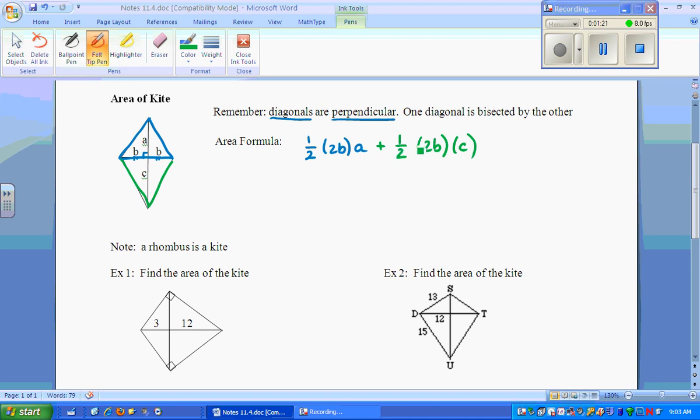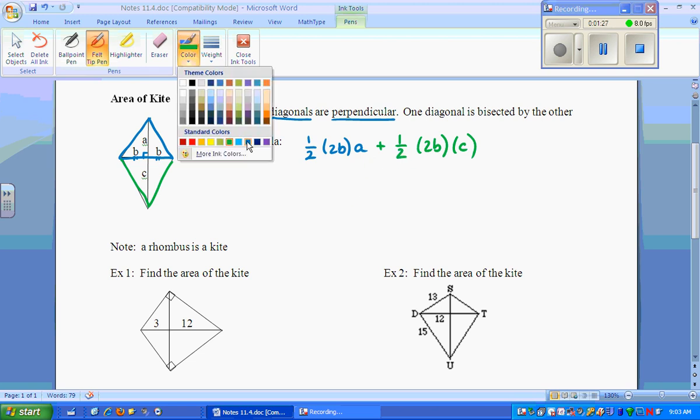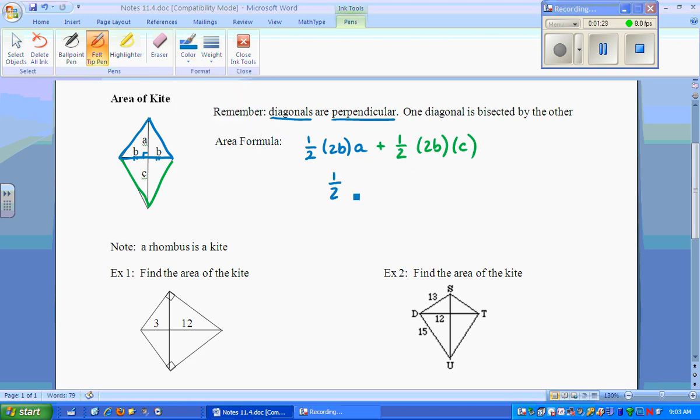And the triangle underneath has the area of 1 half base 2B times the height of C. To find the area of the kite, we would add both of these. They both have a half in common. So I can pull out a half and a 2B. What's left over is A plus C. This is the area formula. But wait a second. What are these?